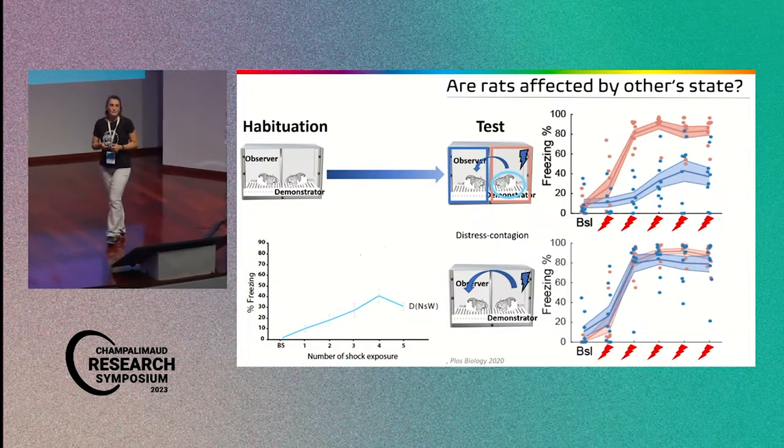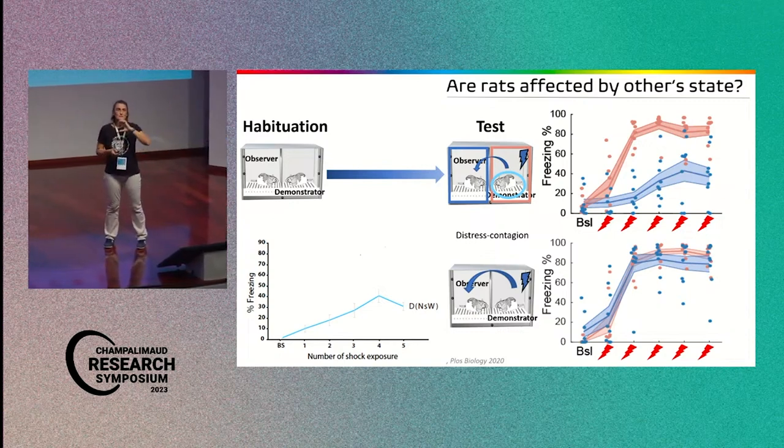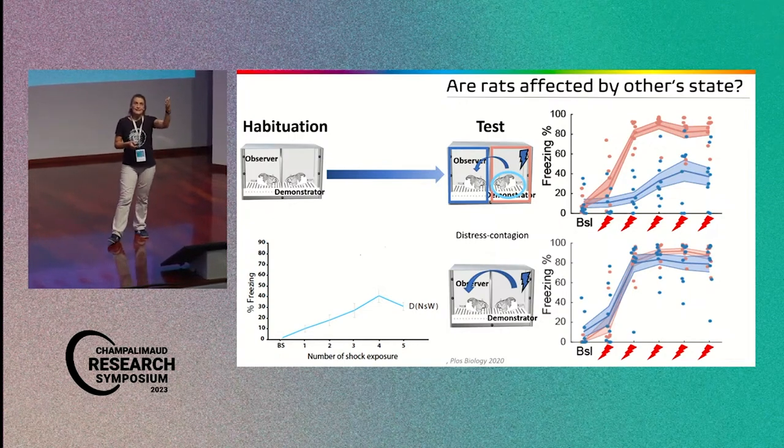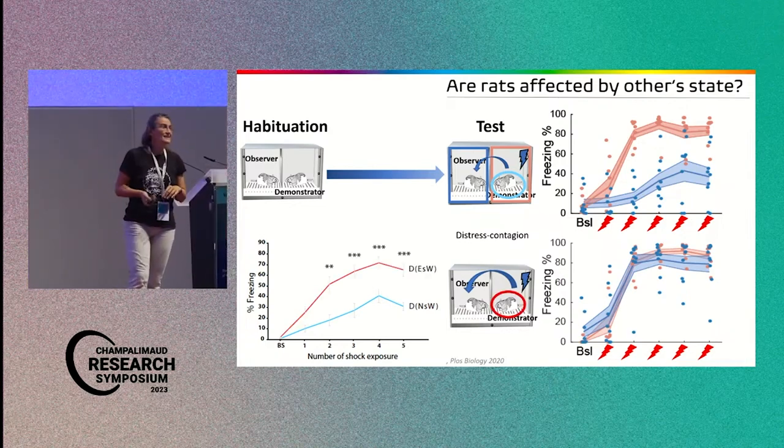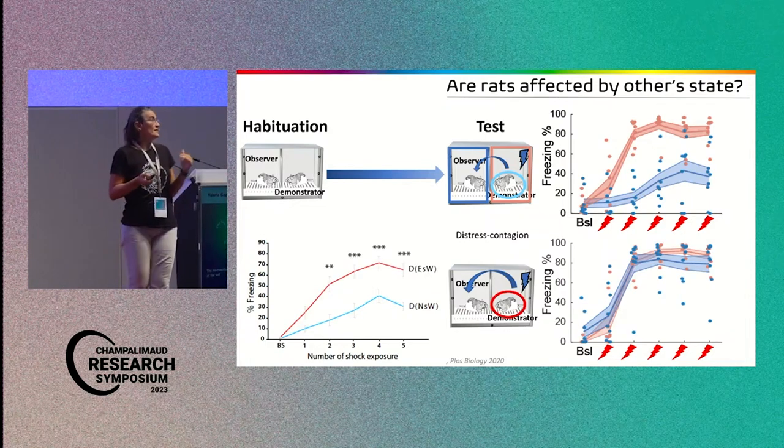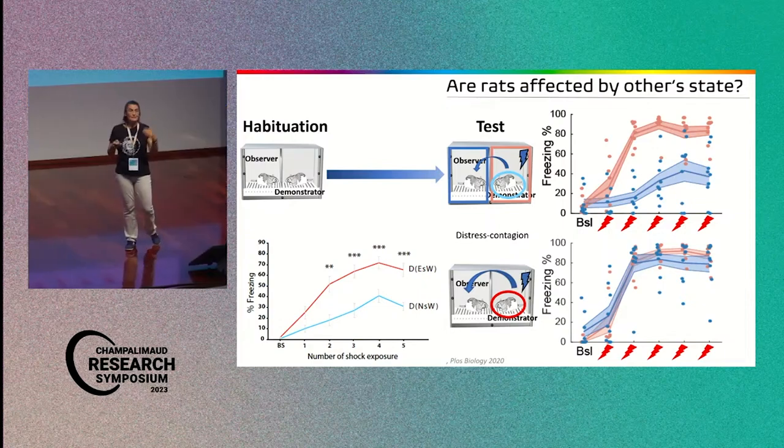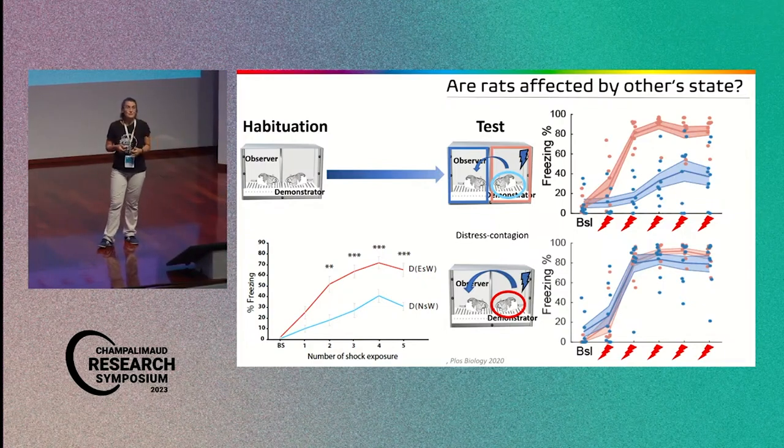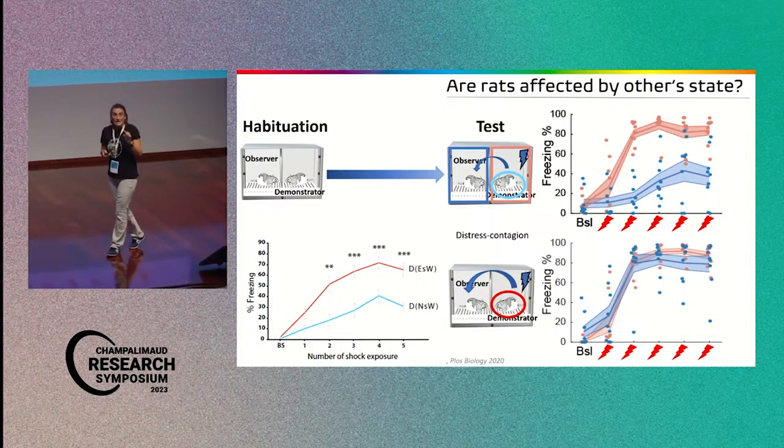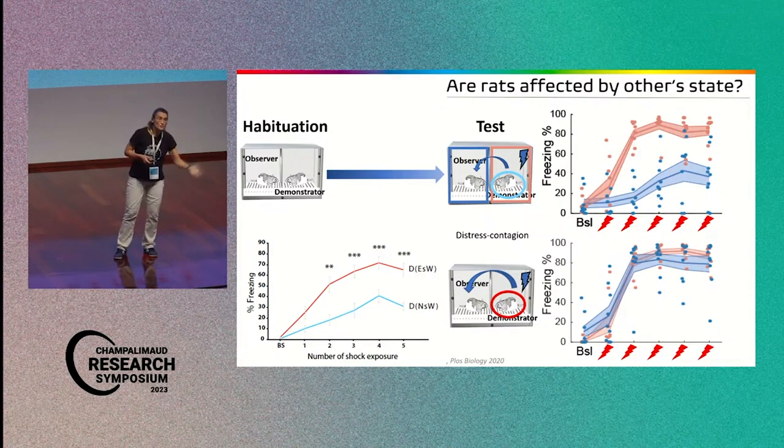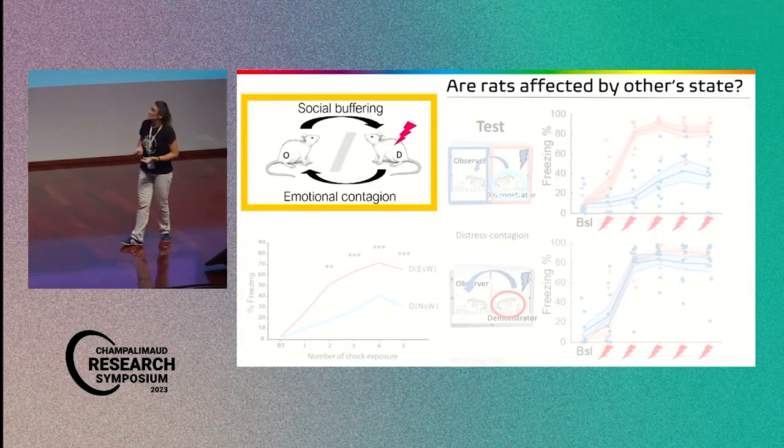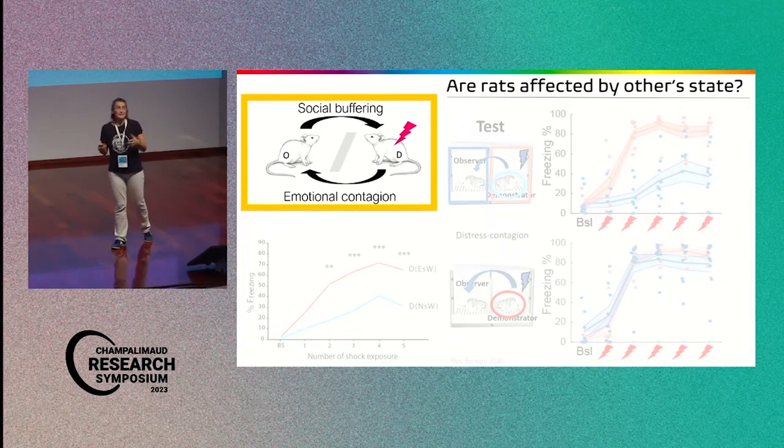And interestingly, if we now rerun the experiment, for instance, and we take the demonstrator and we split them into groups, the groups that were paired with the naive observer and the group of demonstrators that were paired with the experienced observer, and we plot the freezing, you see that there is a difference with the demonstrators that were paired with the naive freezing less than those paired with the experienced. This suggests that the information flow doesn't only go from the demonstrator to the observer, but actually it also goes from the observer to the demonstrator.